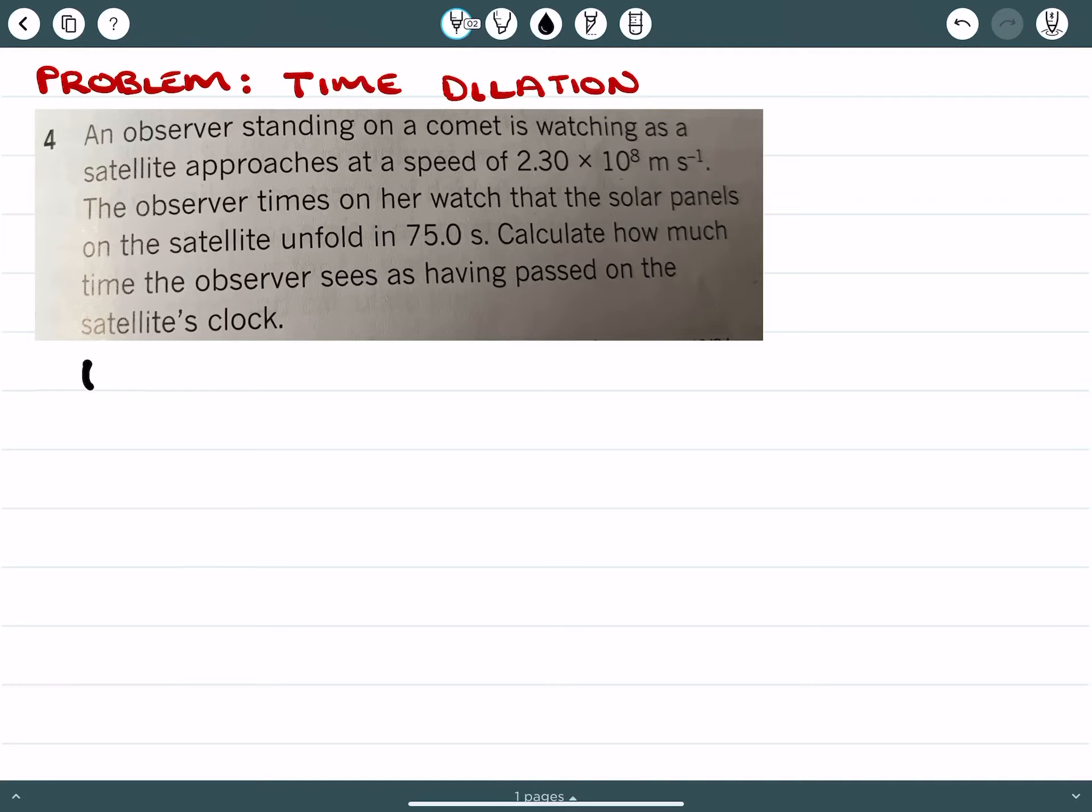We can have a look at time. This will be dilated time, time prime. Time nought, which is proper time. And the velocity of the satellite as it approaches the observer.